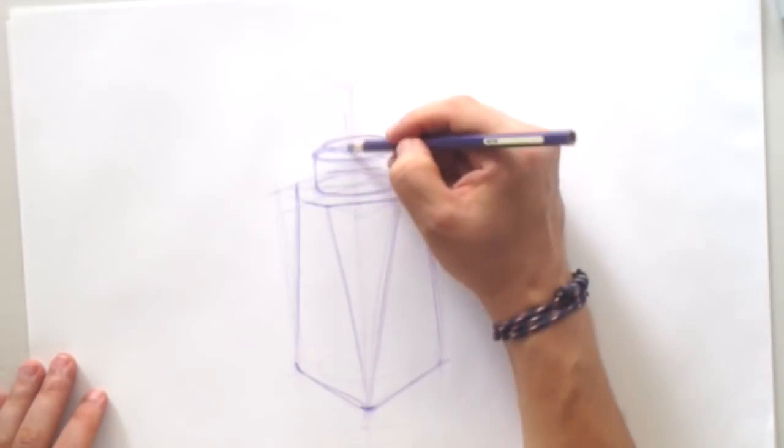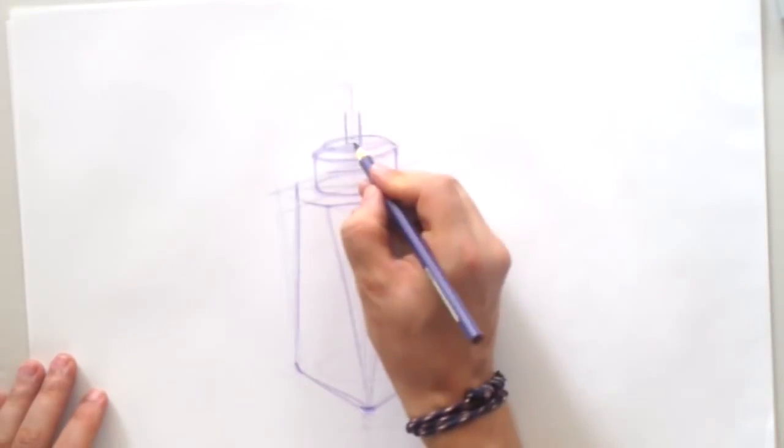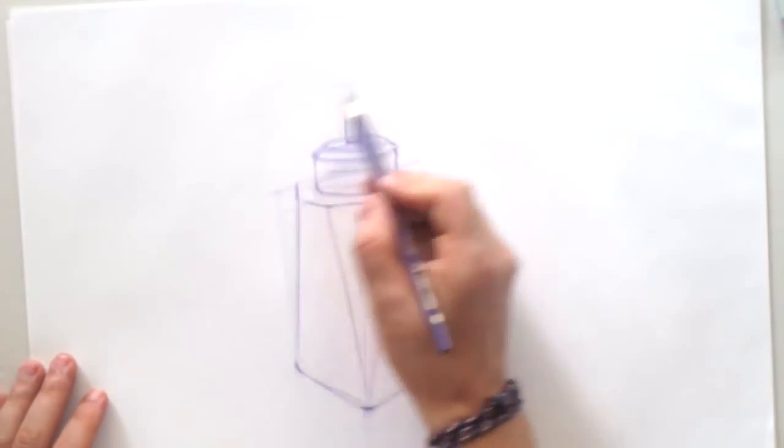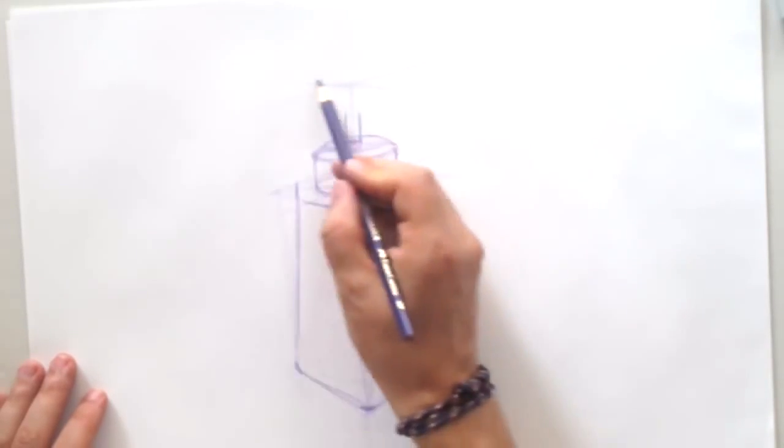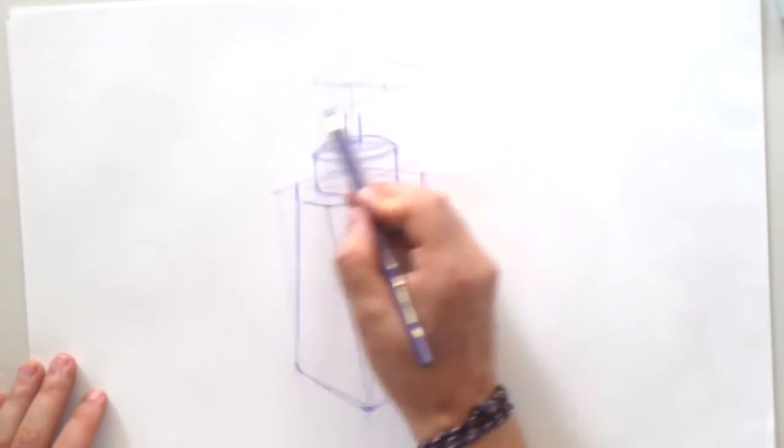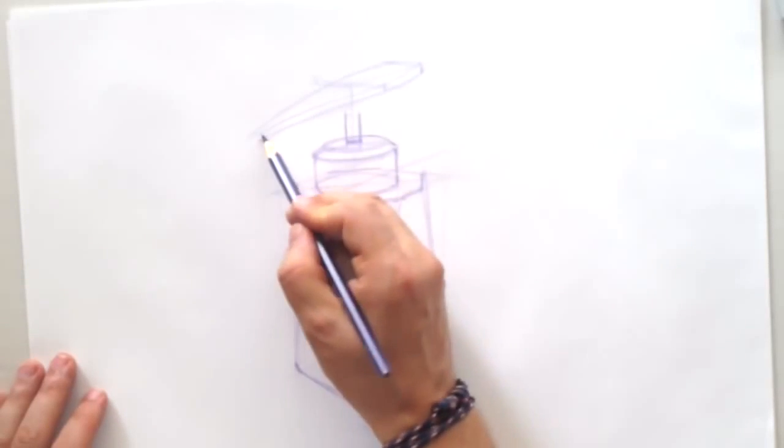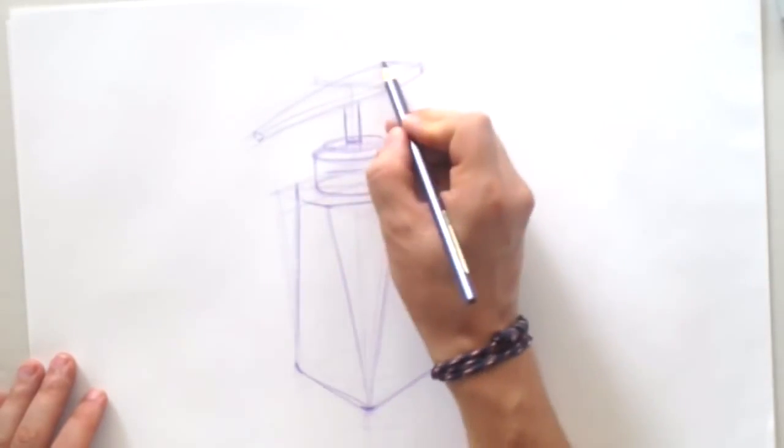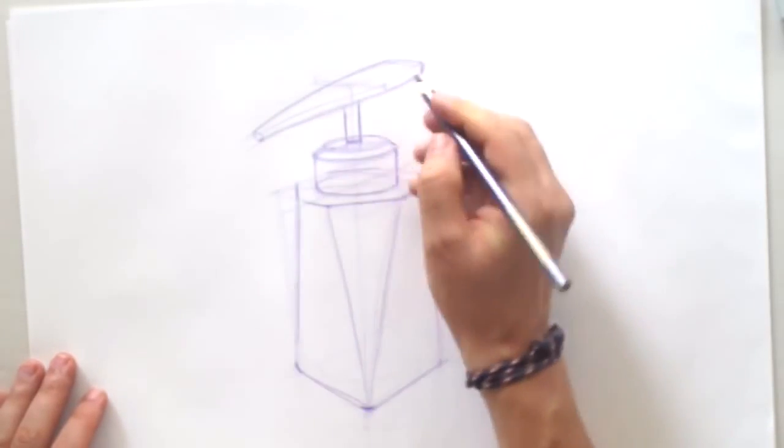And I'm using ellipses to create this cylinder on top. And one more detail on top is actually that part that you press.